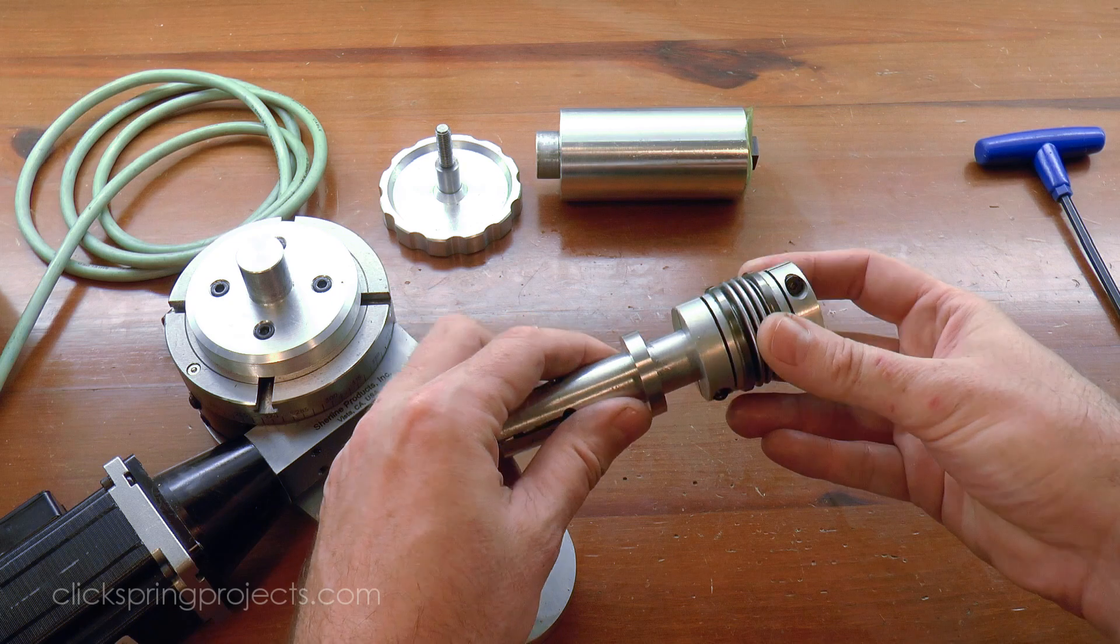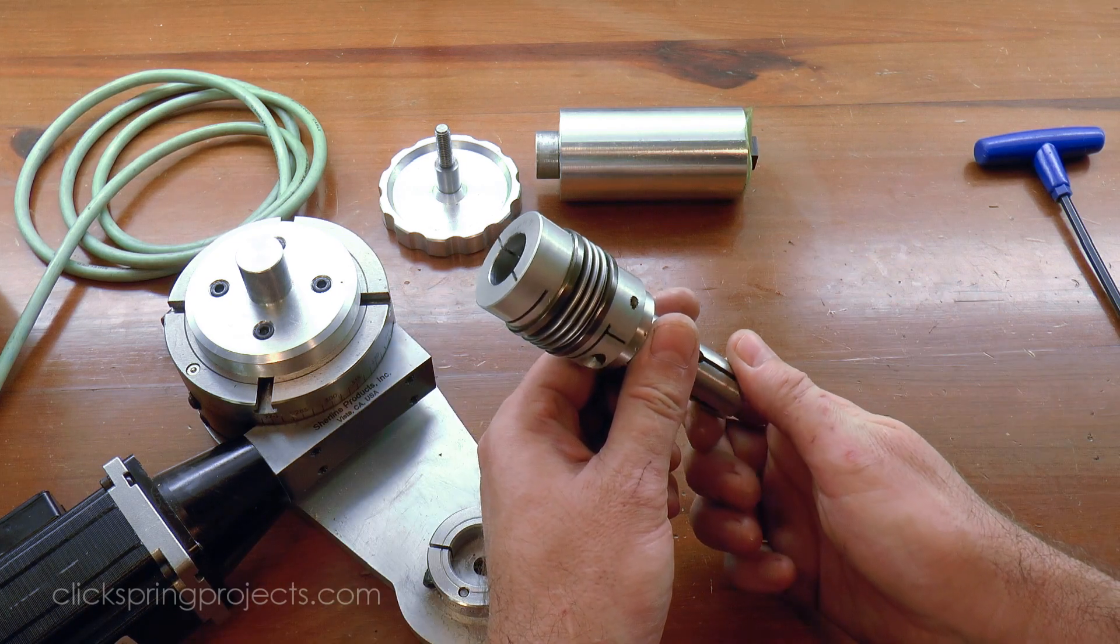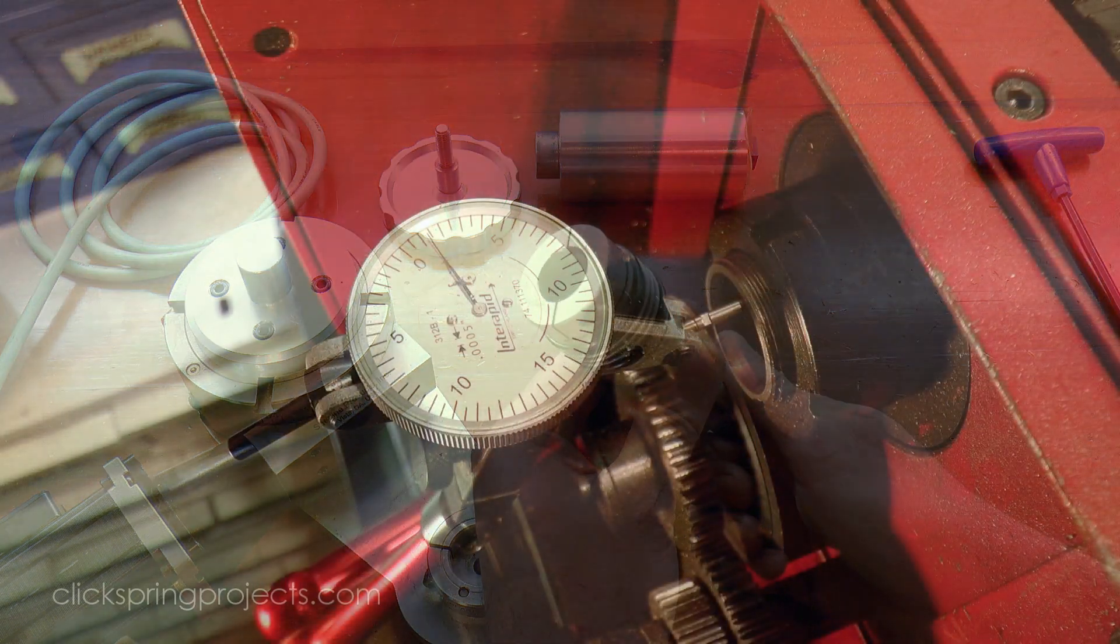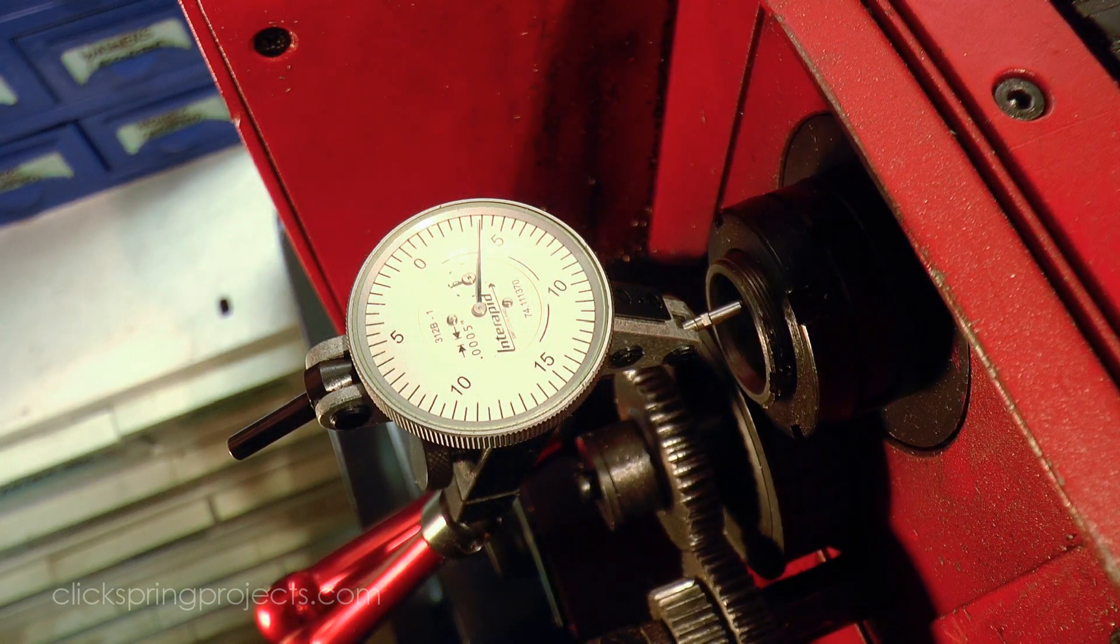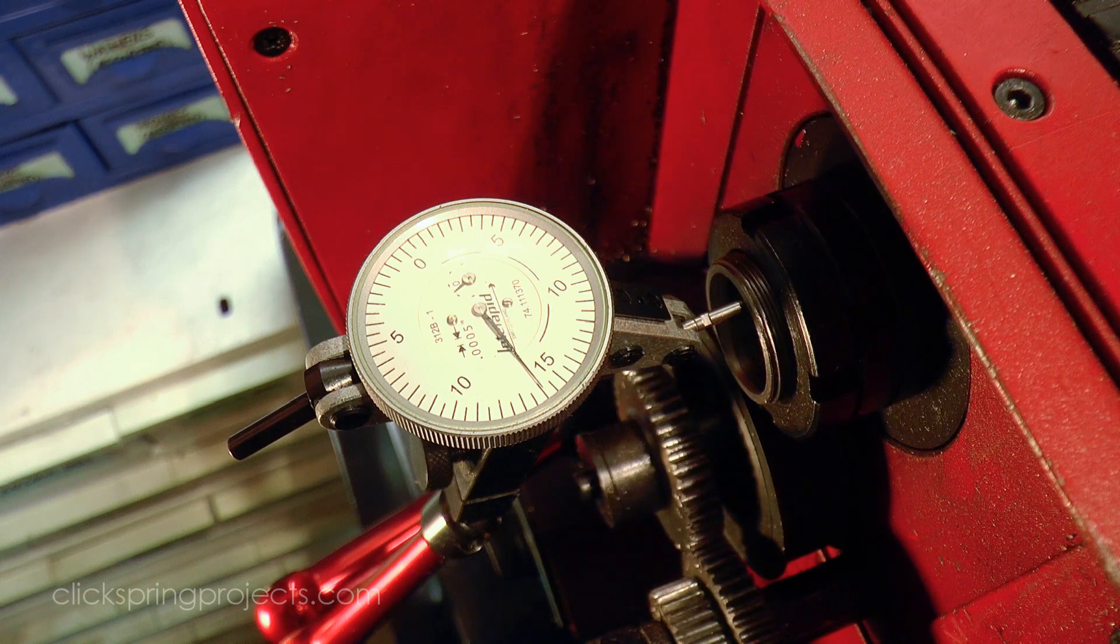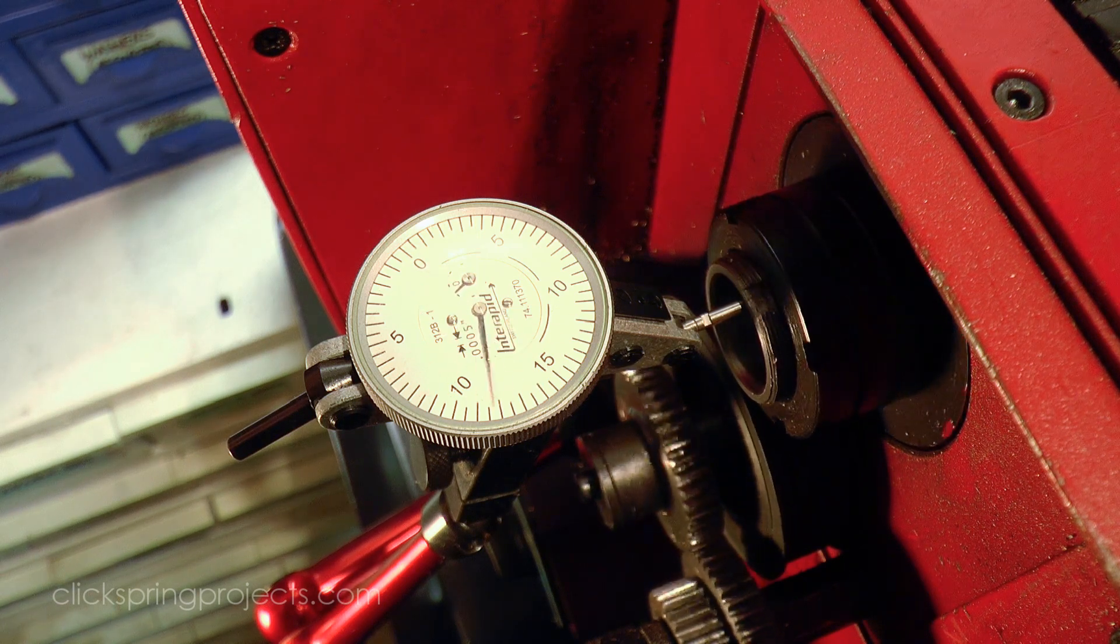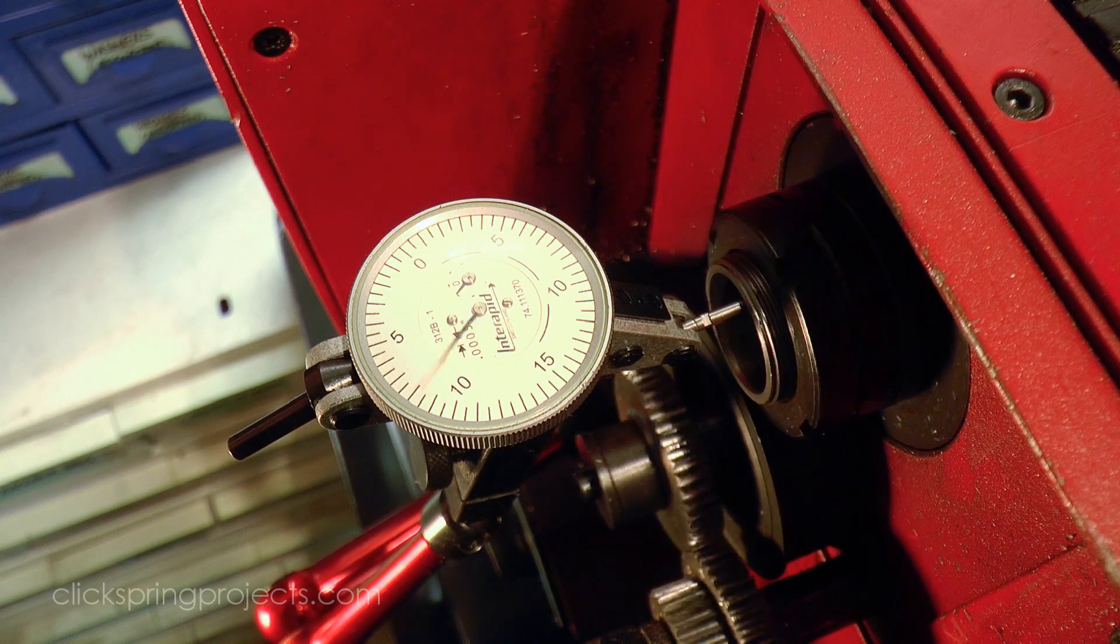Now you might be wondering why I've used an expensive bellows coupling. Well it turns out that my lathe has a rather shocking run out error at the rear of the spindle bore. If left as is, that eccentricity would pull the table off the axis of the lathe, resulting in a small error in tooth spacing around the wheel.